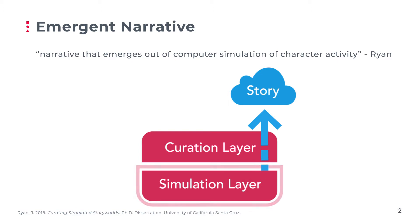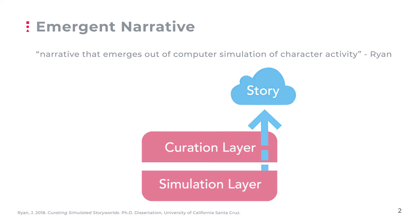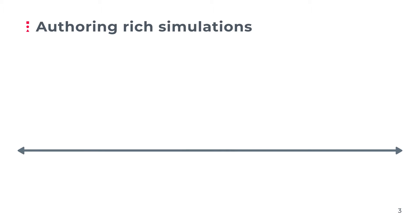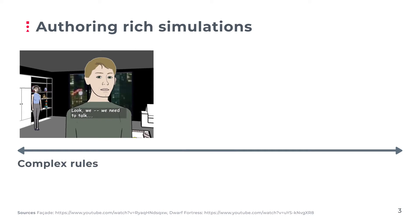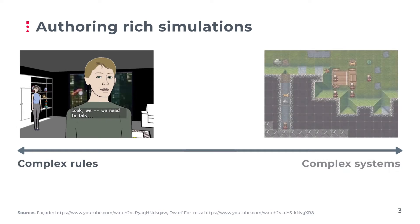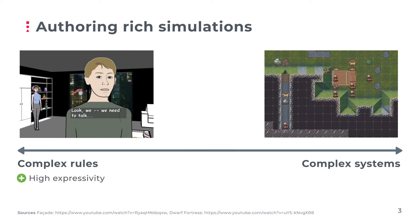In our paper, we focus on the simulation layer. That means our goal is to create rich simulations with complex character behavior. There have been various approaches to creating rich simulations in the past. Most have either relied on complex simulation rules, such as the game Facade, or on complex systems, such as Dwarf Fortress. Systems using complex rules offer the creator much more liberty to encode elaborate social behaviors, such as deep relationships and emotional interactions. However, this comes with a considerable authoring workload for the creators, meaning that systems using complex rules tend to not scale well.